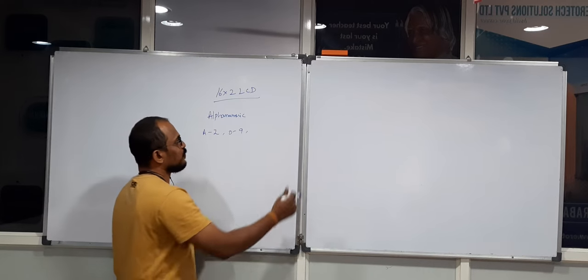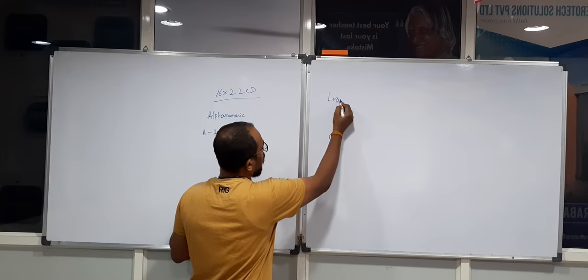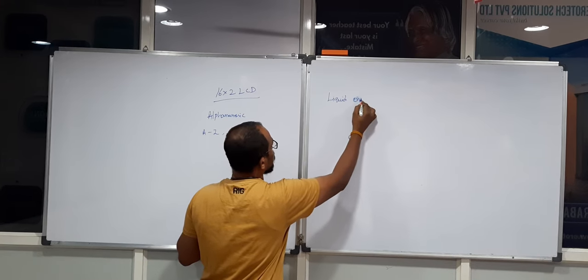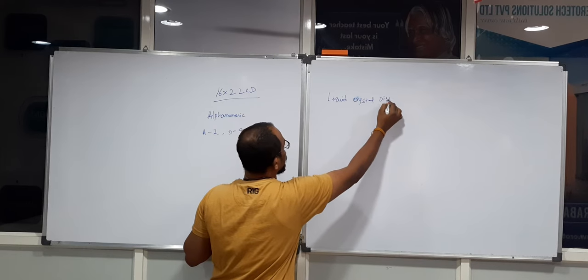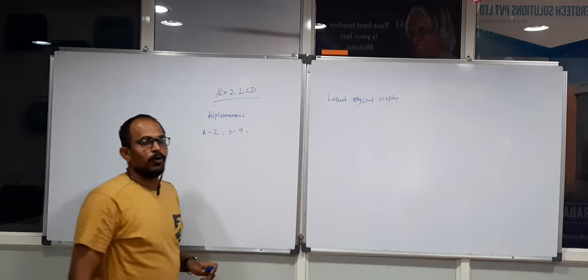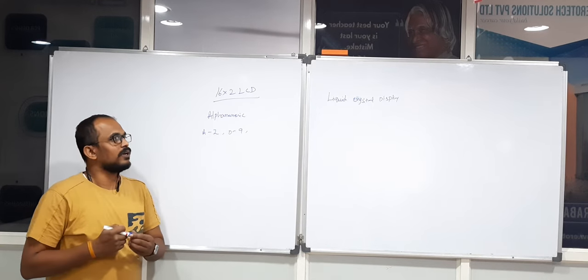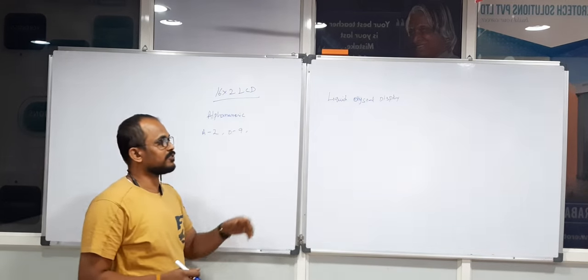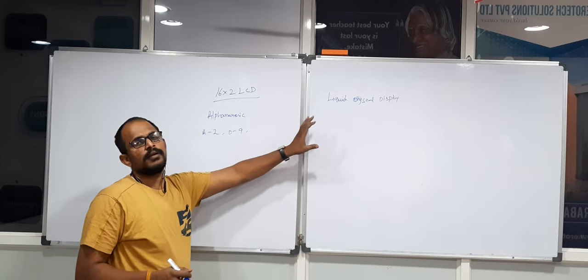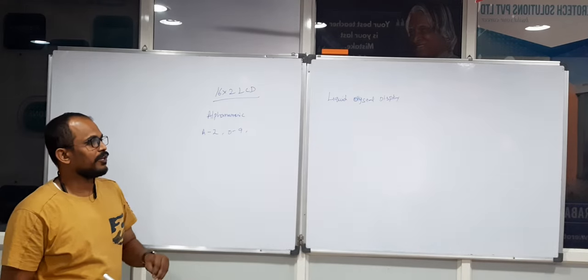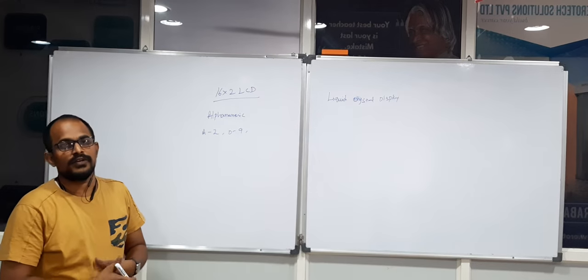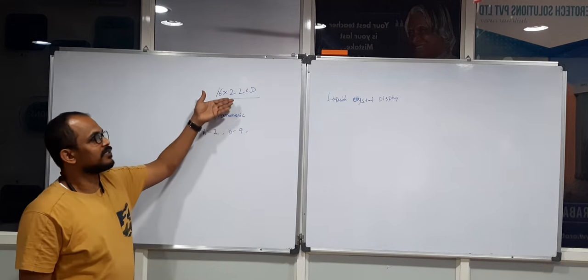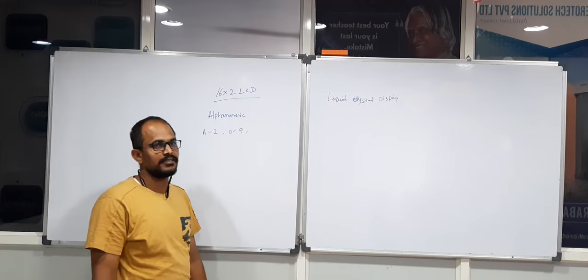LCD stands for Liquid Crystal Display. These devices are found in different kinds of applications like swiping machines, all portable devices, small displays for products, small building machines, point-of-sale machines, small lockers, and inverters. Wherever you are expecting only a limited amount of text display, you can proceed with 16x2 or any size. Basically 16x2 is one basic size of LCD screen.